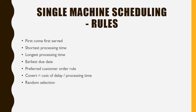There are seven rules for single machine scheduling. First, First Come First Serve. Second, Shortest Processing Time rule. Third, Longest Processing Time rule. Fourth, Earliest Due Date rule. Fifth, Preferred Customer Order rule. Sixth, the Covert rule — where Covert equals cost of delay divided by processing time. And seventh, Random Selection rule.